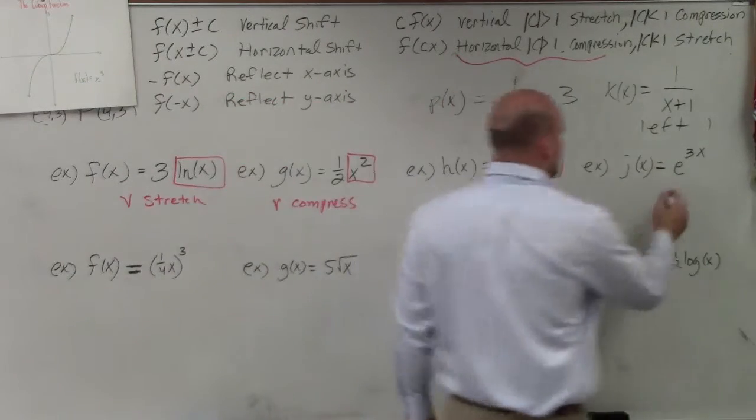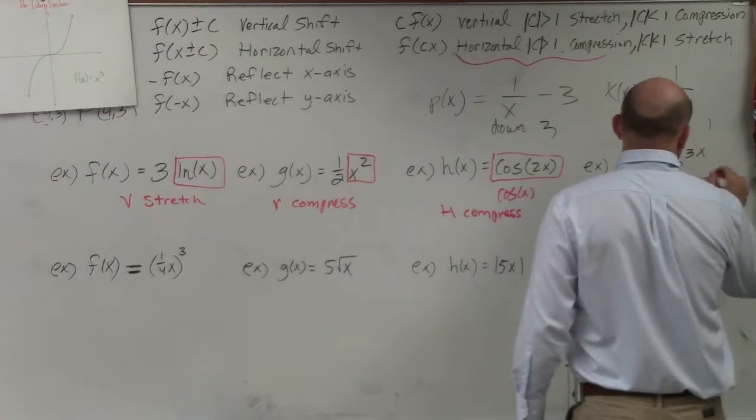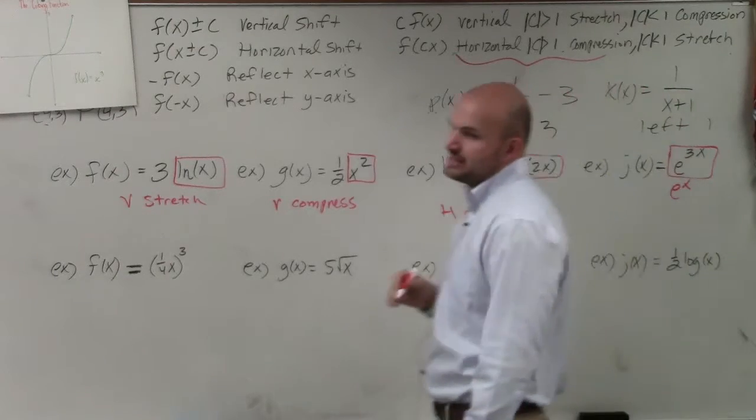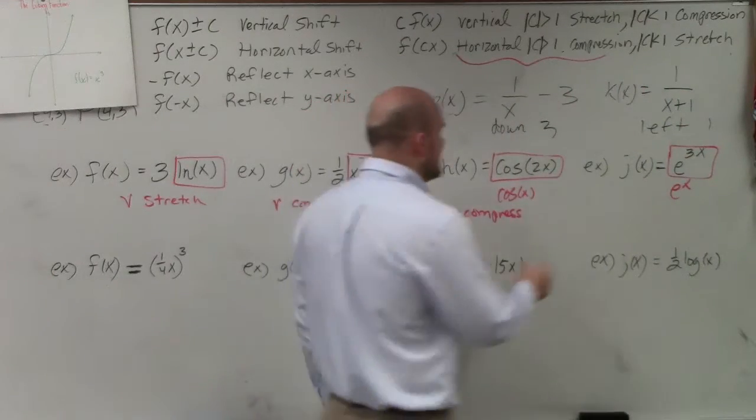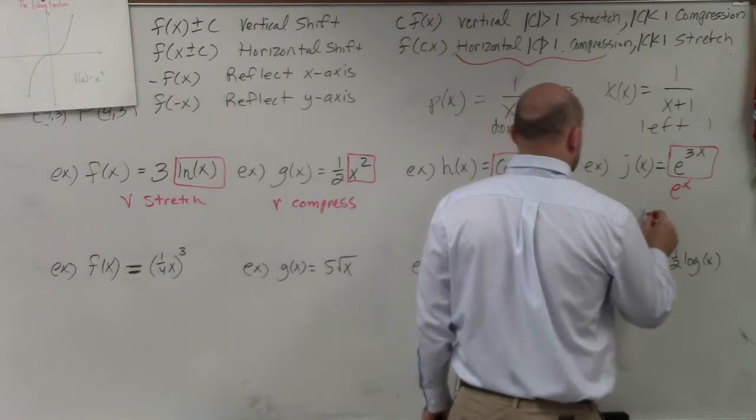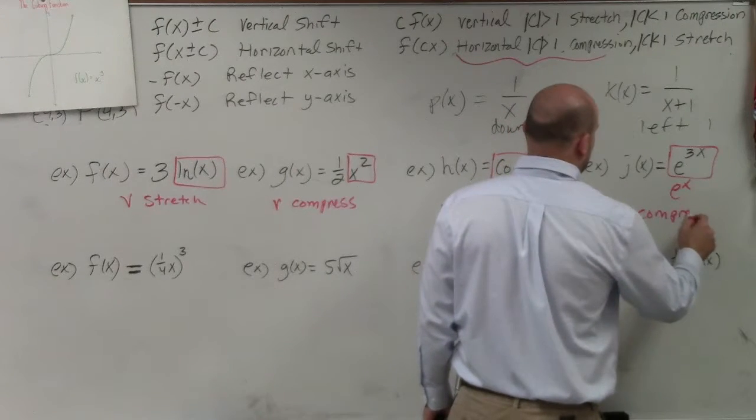Here, my parent function, e to the x, has changed. So I'm multiplying by a number inside of my function, which is greater than 1. So it's another example of horizontal compression.